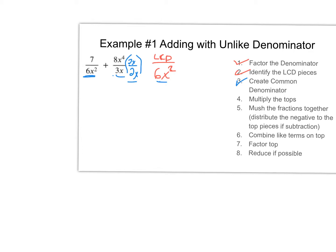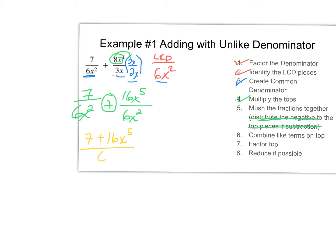Now multiply your tops using the common denominator pieces we just created. So we get seven over six x squared, plus now we take eight x to the fourth and multiply it by two x to get sixteen x to the fifth over the common denominator of six x squared. Then mush the fractions together — since this is addition I don't need to distribute a negative — so we get seven plus sixteen x to the fifth over six x squared.